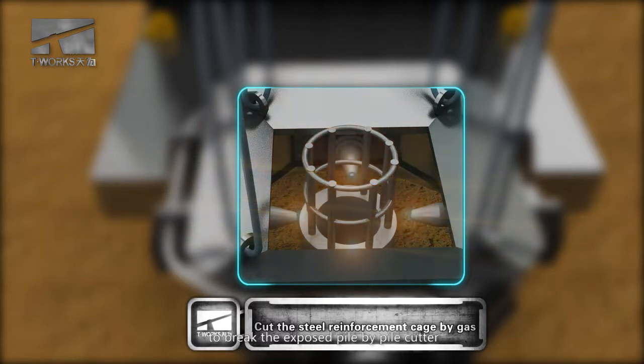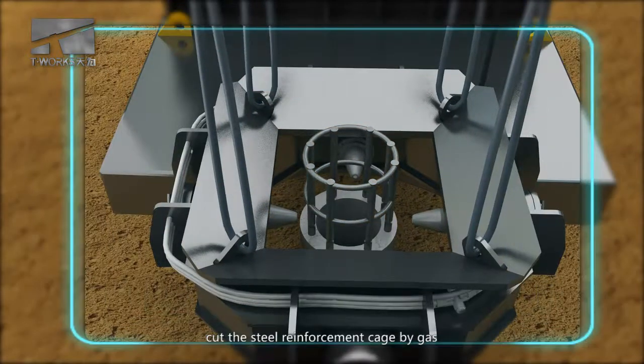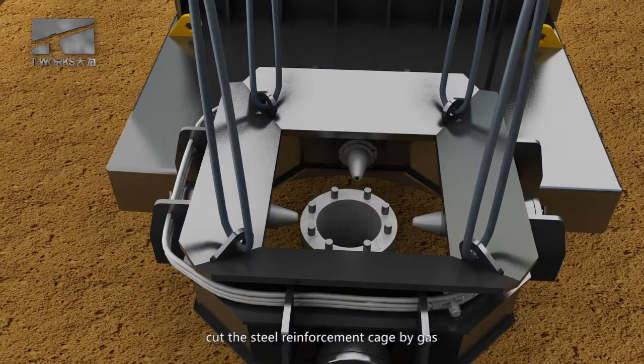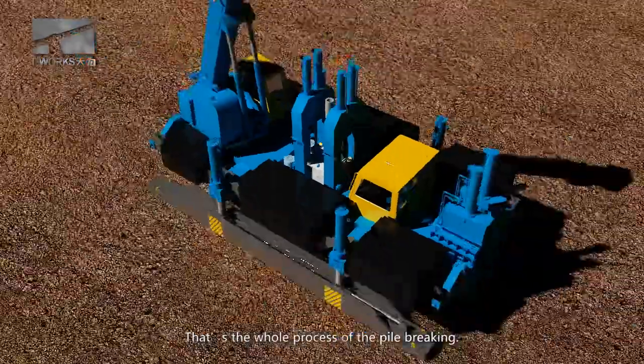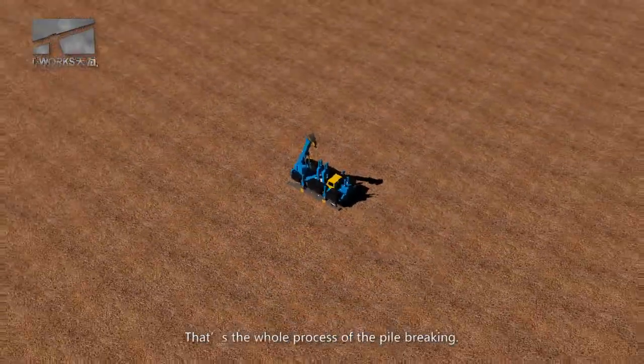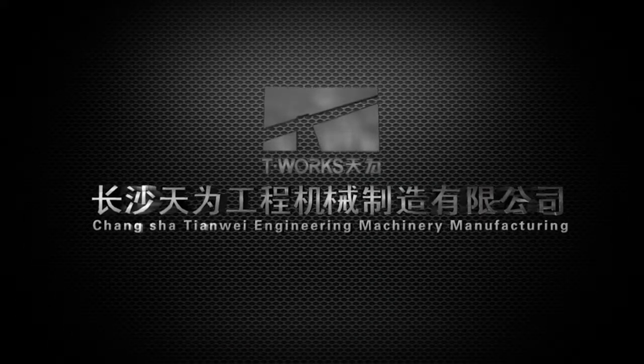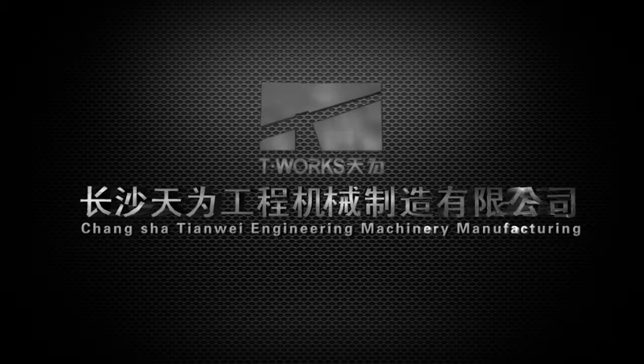Finally, cut the steel reinforcement cage by gas. That's the whole process of the pile breaking.